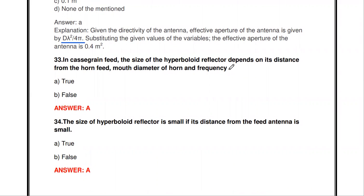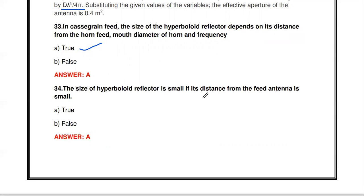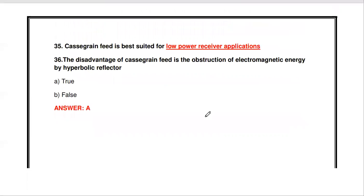In Cassegrain feed, the size of the hyperbolic reflector depends on its distance from the horn feed, the mouth diameter of the horn, and frequency - this is true. Also, the size of the hyperbolic reflector is small if its distance from the feed antenna is small - this is also true.